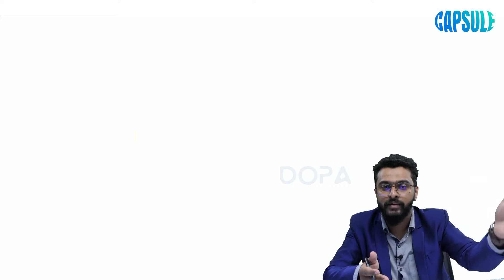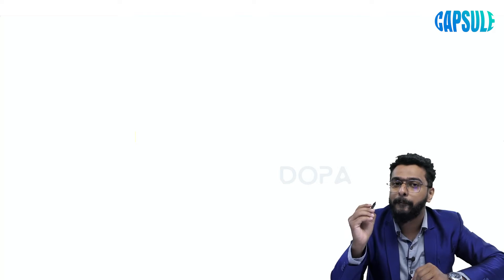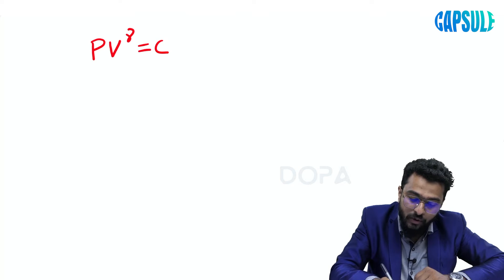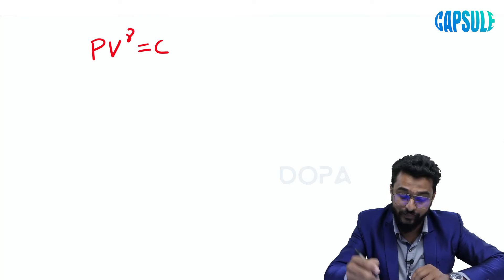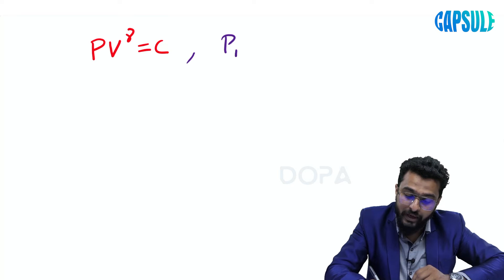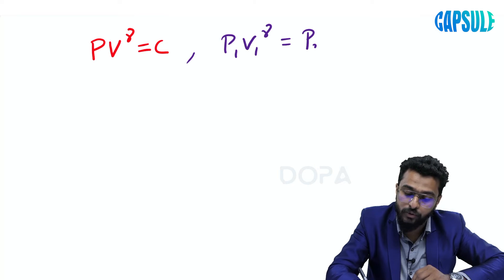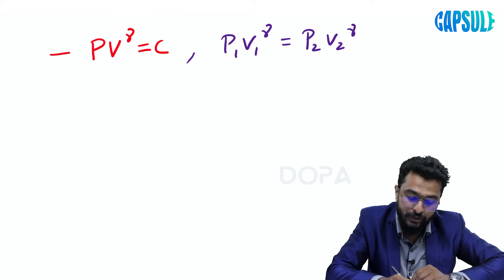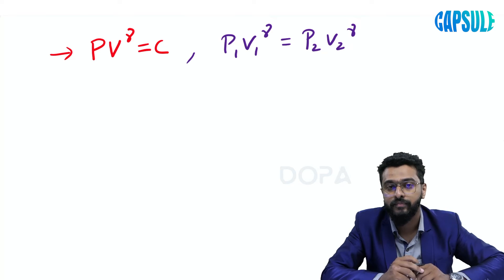I will give you the equations — if you study these equations it is easy to crack questions from thermodynamics. The first relation is the pressure-volume relation in adiabatic process: P into V raised to gamma equals constant. That means P1 V1 raised to gamma equals P2 V2 raised to gamma.